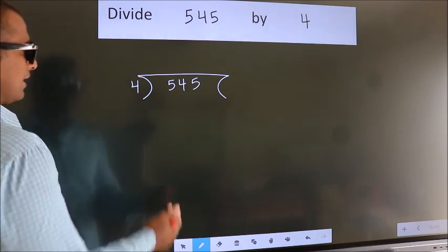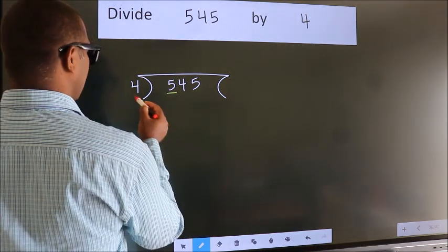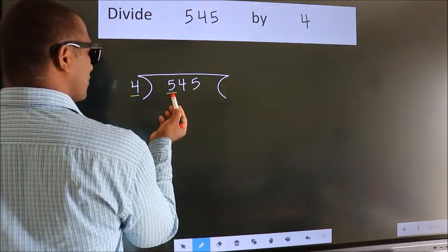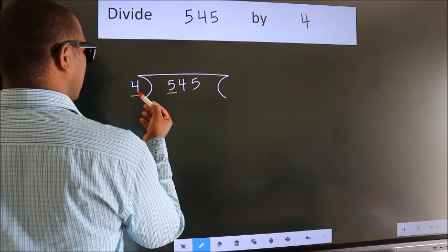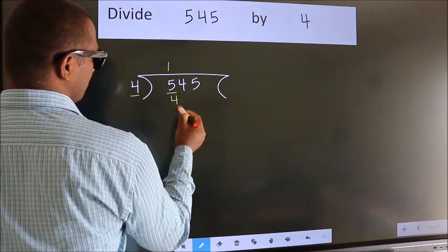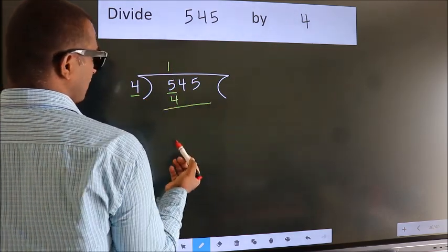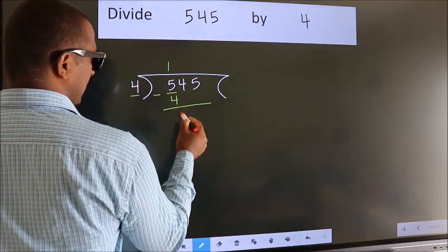Next. Here we have 5, here 4. A number close to 5 in 4 table is 4 once 4. Now, we should subtract. We get 1.